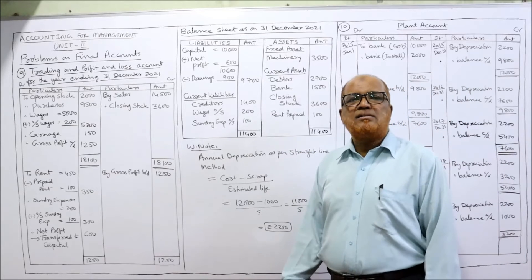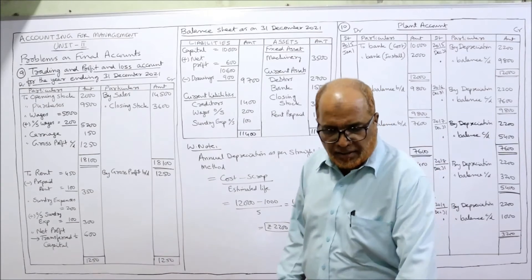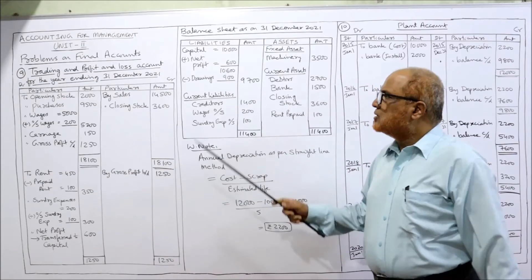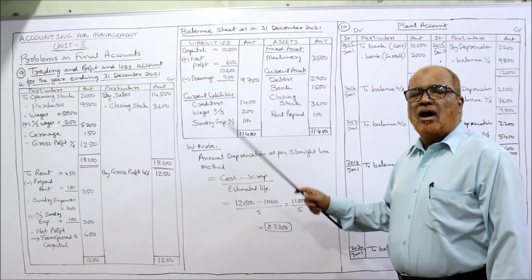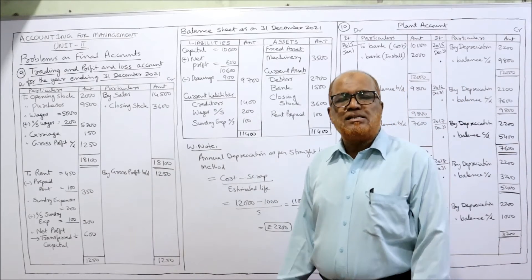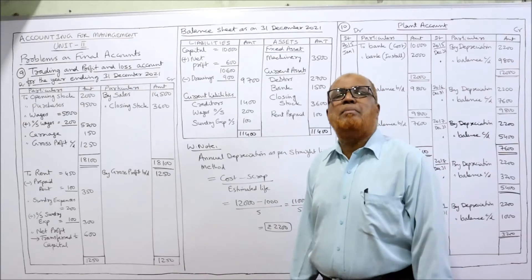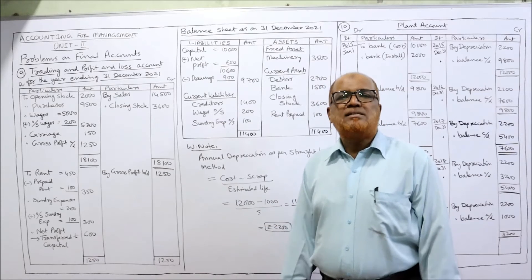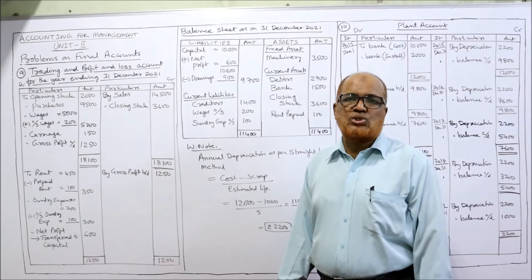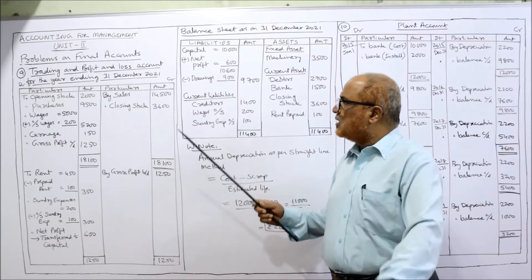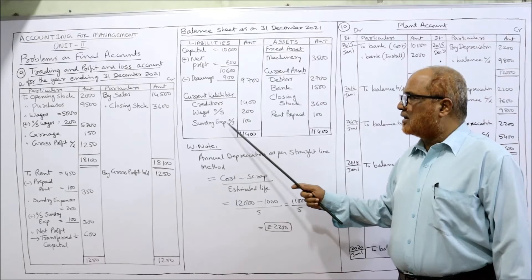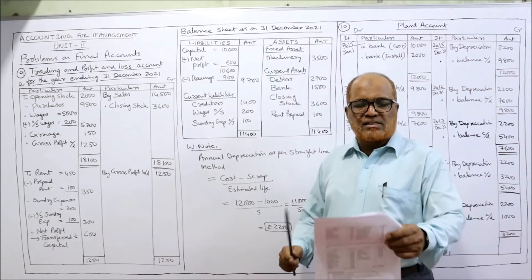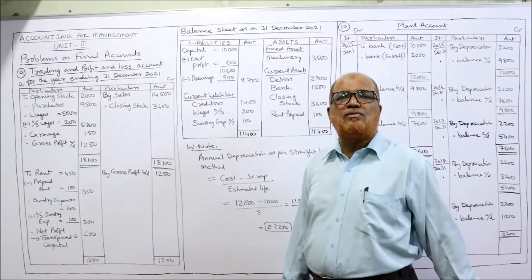Current liabilities consist of creditors given in the problem as 1,400. Two more current liabilities come from the adjustments: wages outstanding 200 and sundry expenses outstanding 100.